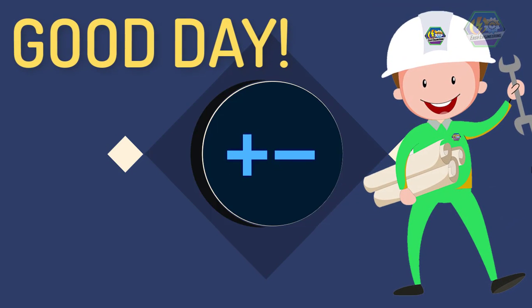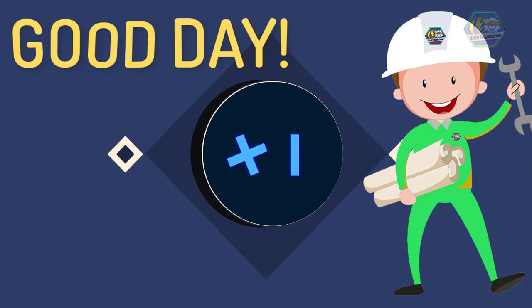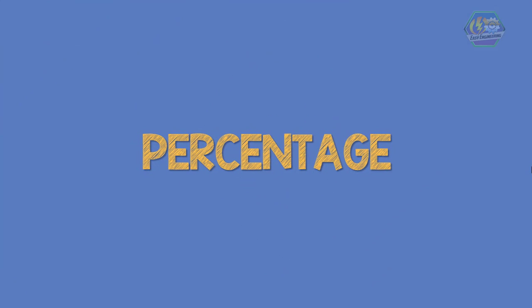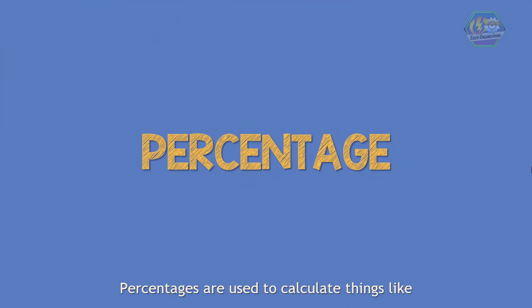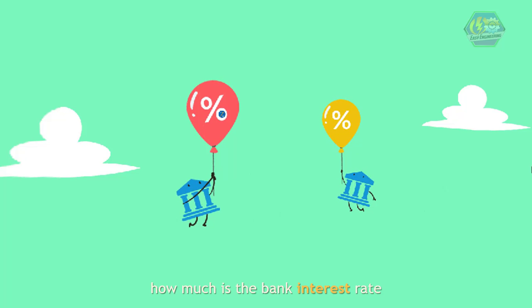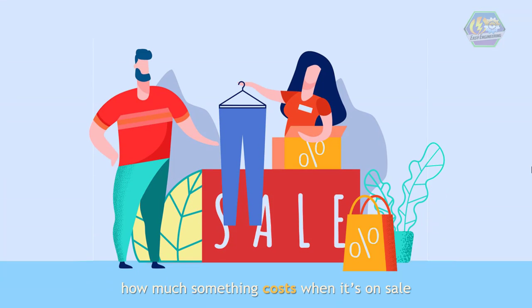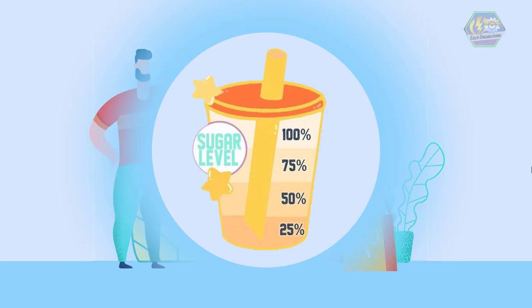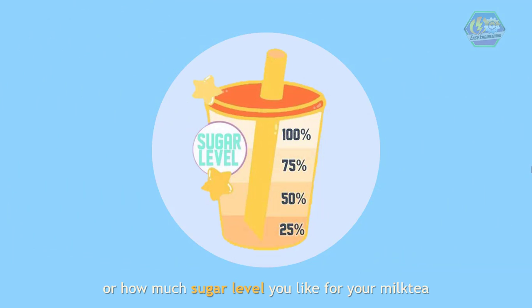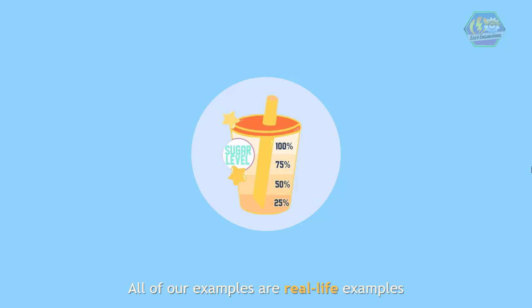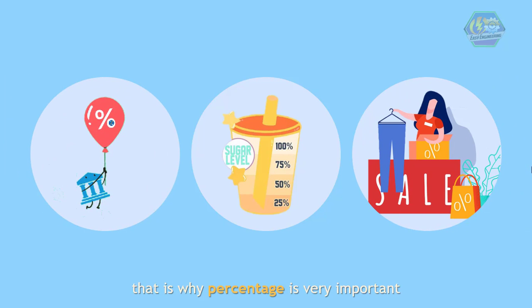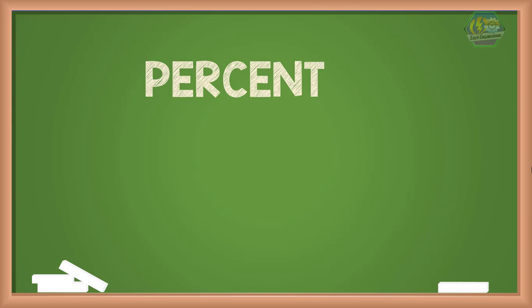Good day learners, this is Easy Engineering. For today's topic we're going to learn about percentages. Percentages are used to calculate things like how much the bank interest rate is, how much something costs when it's on sale, or how much sugar level you like for your milk tea. All of our examples are real-life examples, that's why percentage is very important and is used widely in different areas.